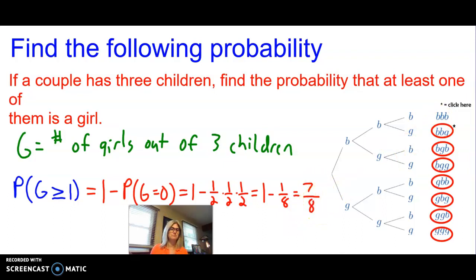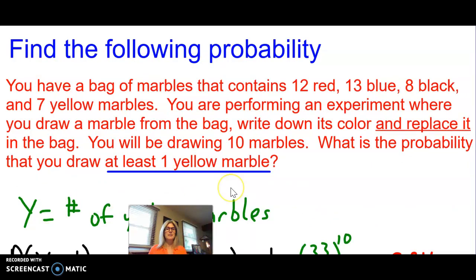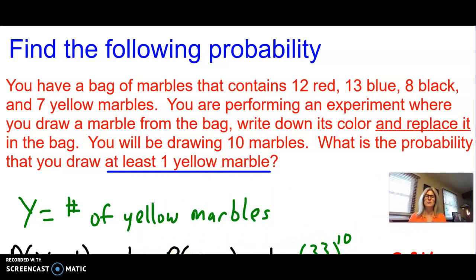Let's do this problem. Find the following probability. You have a bag of marbles that contain 12 red, 13 blue, 8 black, and 7 yellow marbles. You're performing an experiment where you draw a marble from a bag, write down its color, and then replace it in the bag. You'll be drawing 10 marbles. What is the probability you draw at least 1 yellow marble? And I want you to hear that - at least 1 marble. That is your cue to look into using the complements.